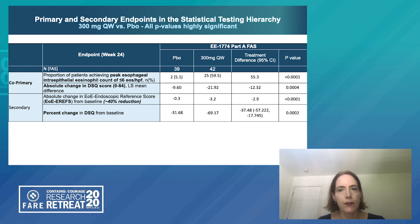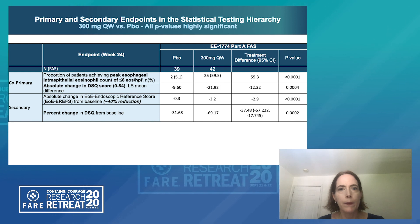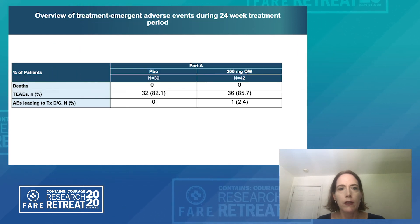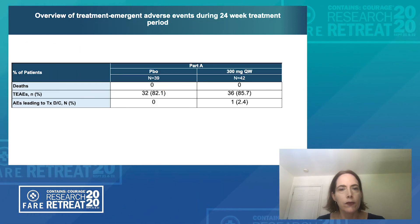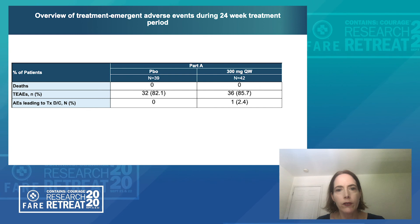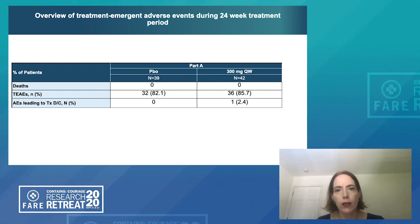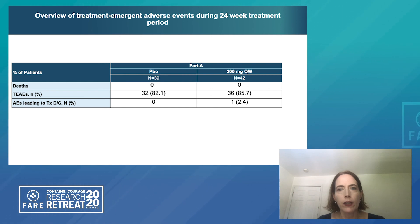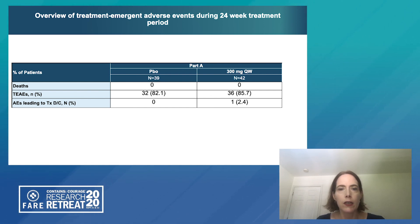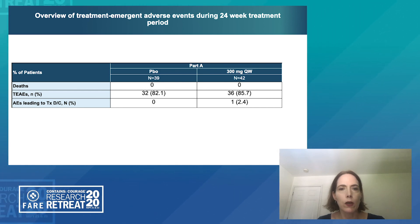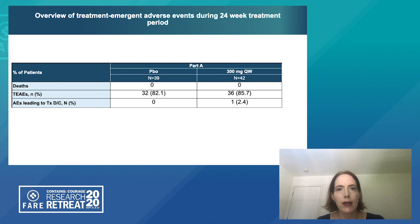This is after a 24-week treatment period. From a safety standpoint, dupilumab is very well characterized from over 8,000 patients treated in other clinical trials, and this trial did not reveal any new safety considerations. Given the length of the trial, the majority of patients did experience at least one treatment-emergent adverse event, but this is not unexpected for a trial of this duration.